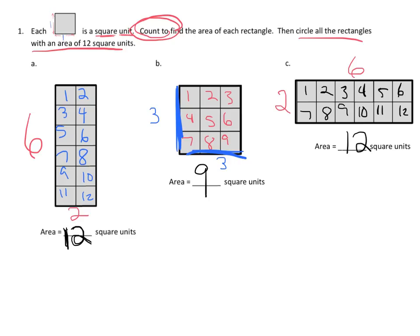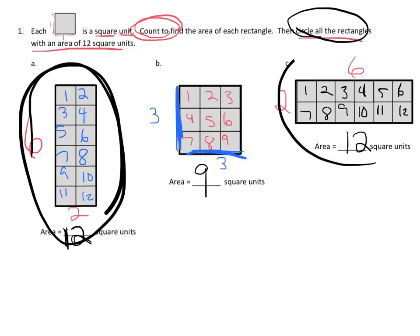Oh, wait, wait. We're not supposed to move on yet. What we're supposed to do is circle all the rectangles with an area of 12 square units. So that's this one and this one. Now we can move on.